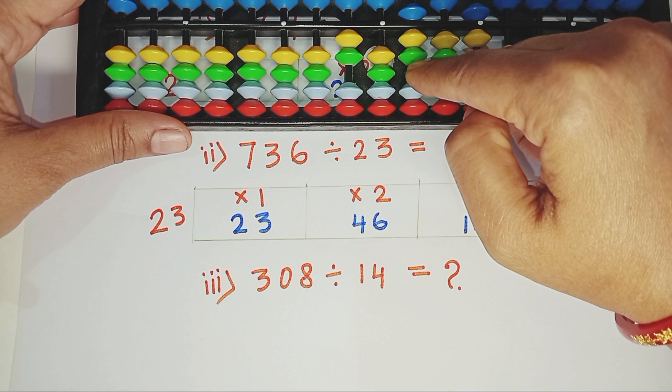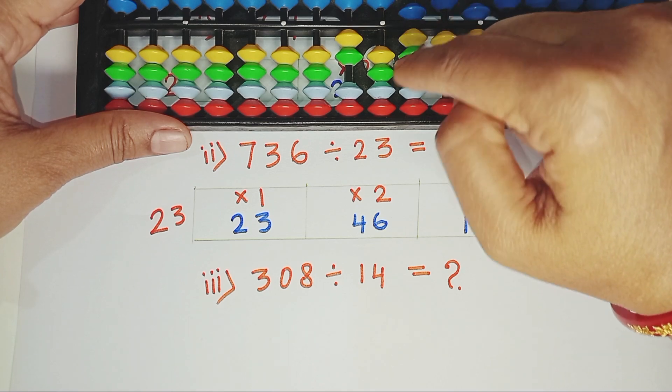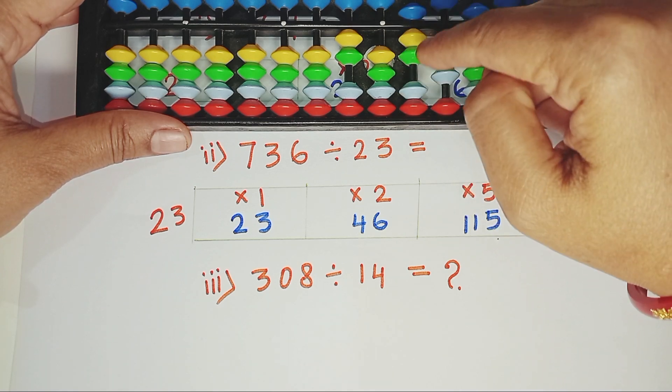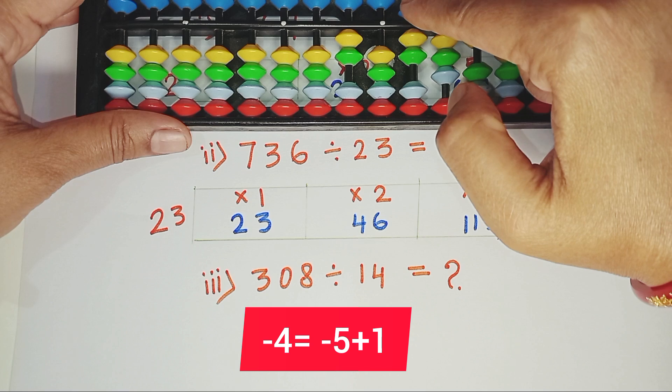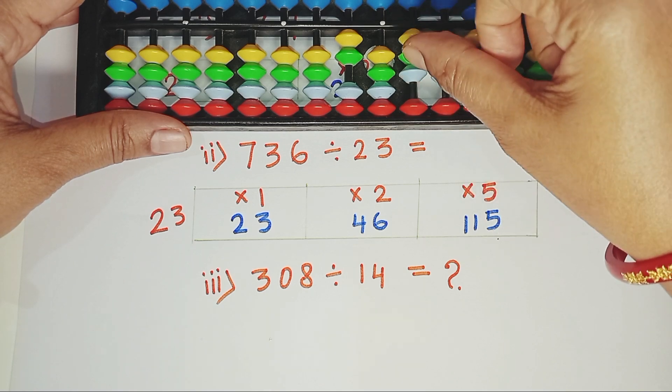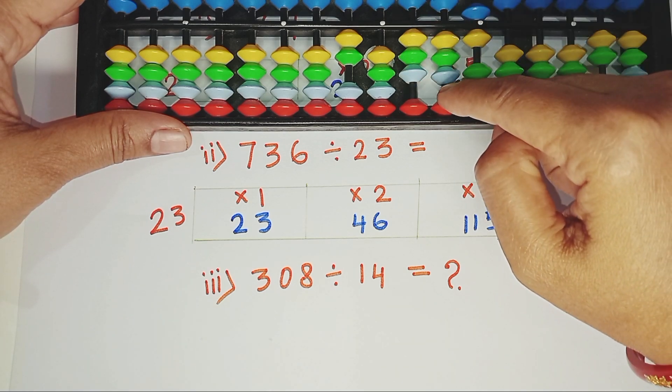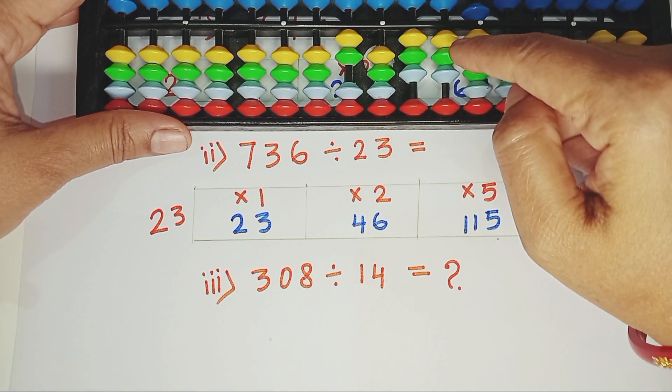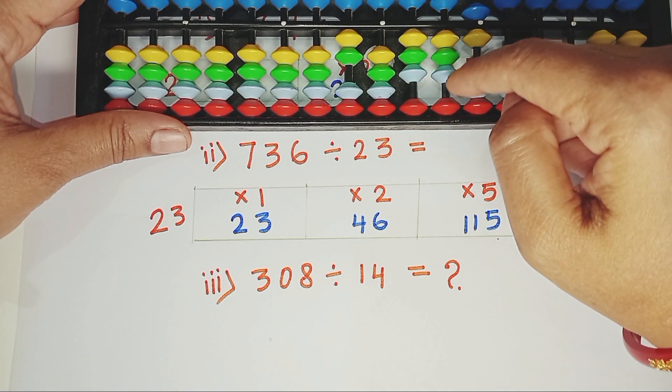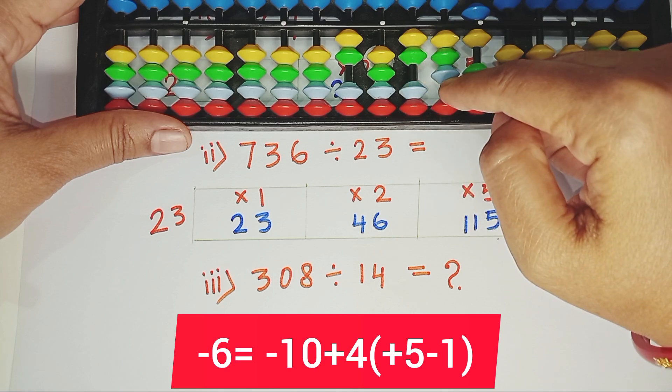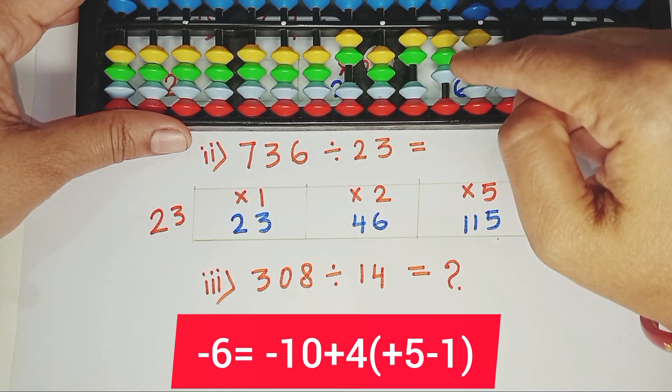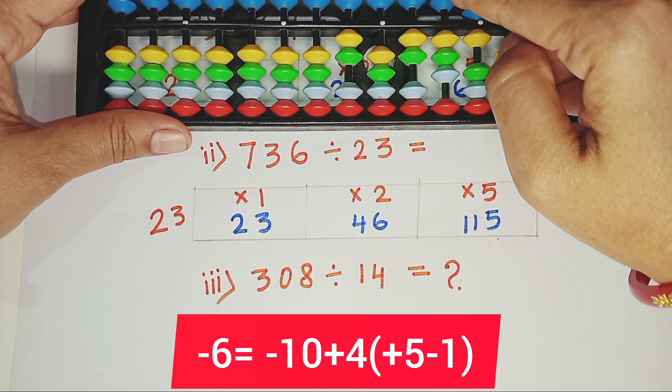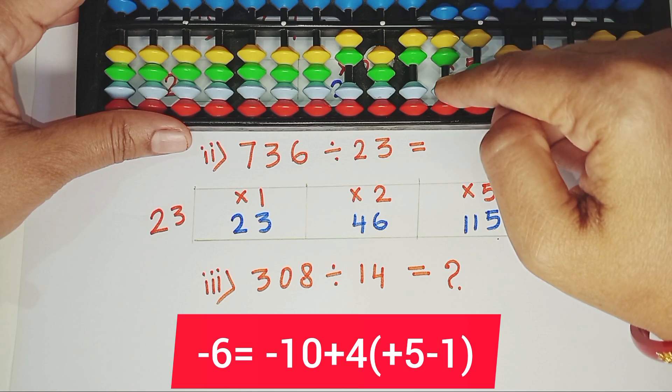We need to subtract 4 from that rod. But we cannot subtract 4 directly. To subtract 4, we need to apply 5's complements. Subtract 5, add 1 to subtract 4. And we cannot add 4, we need to apply a different formula. Add 5. Subtract 1.